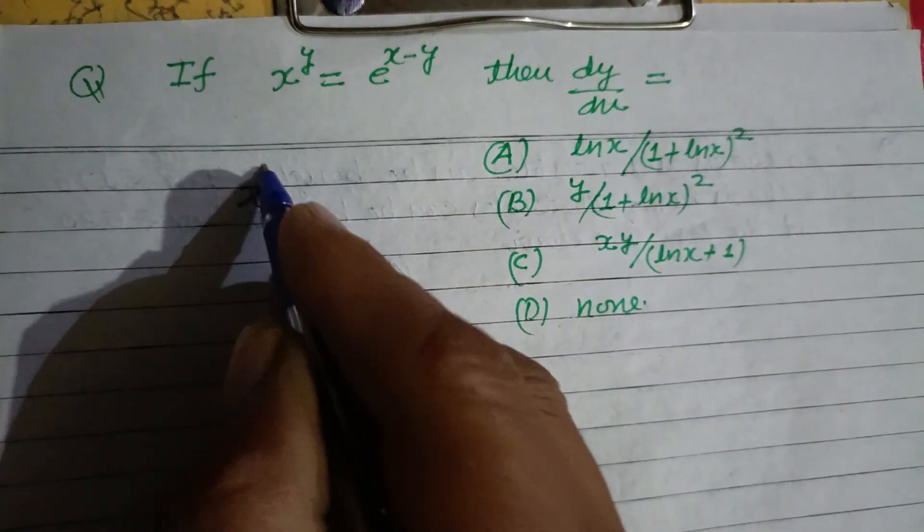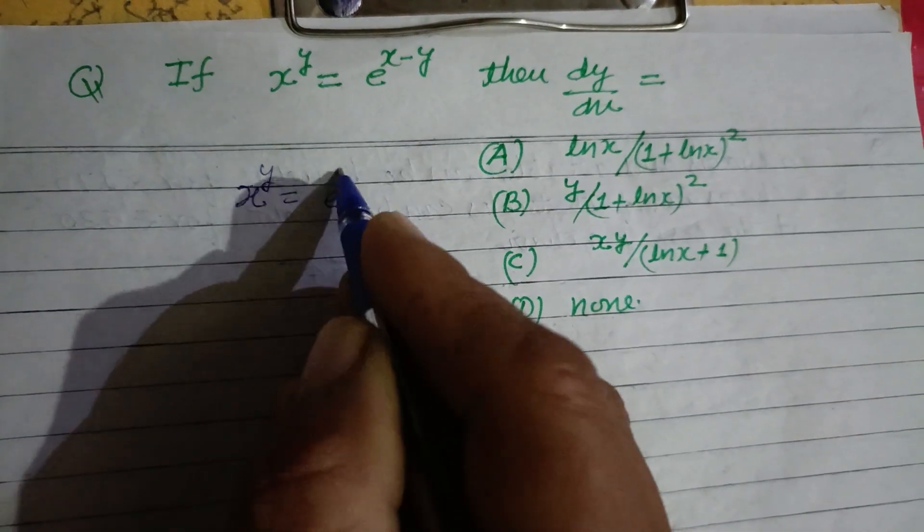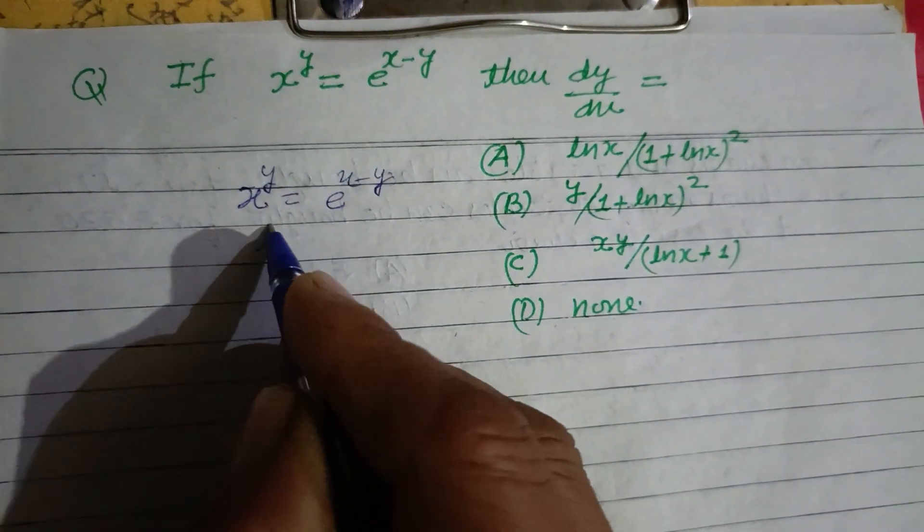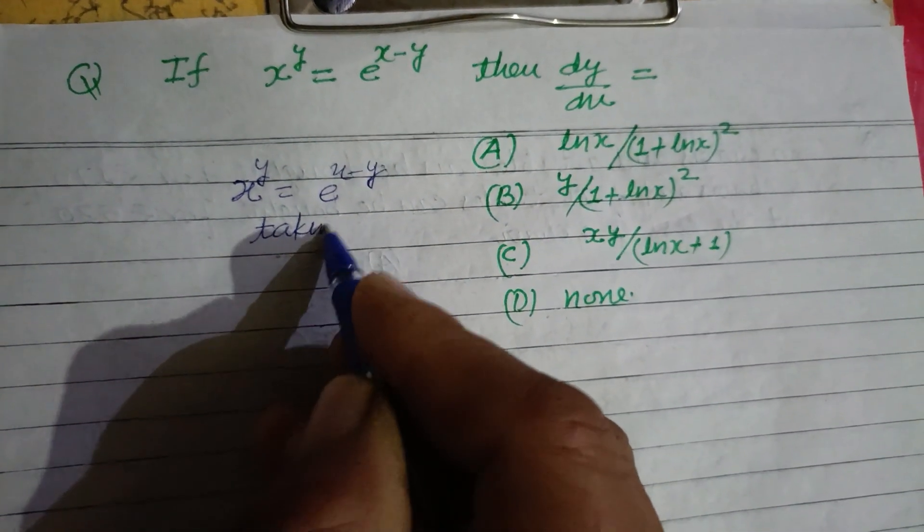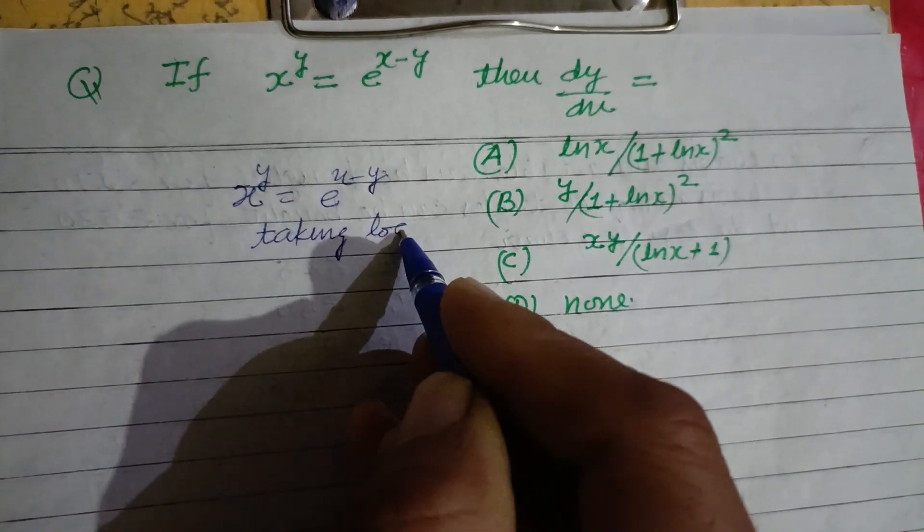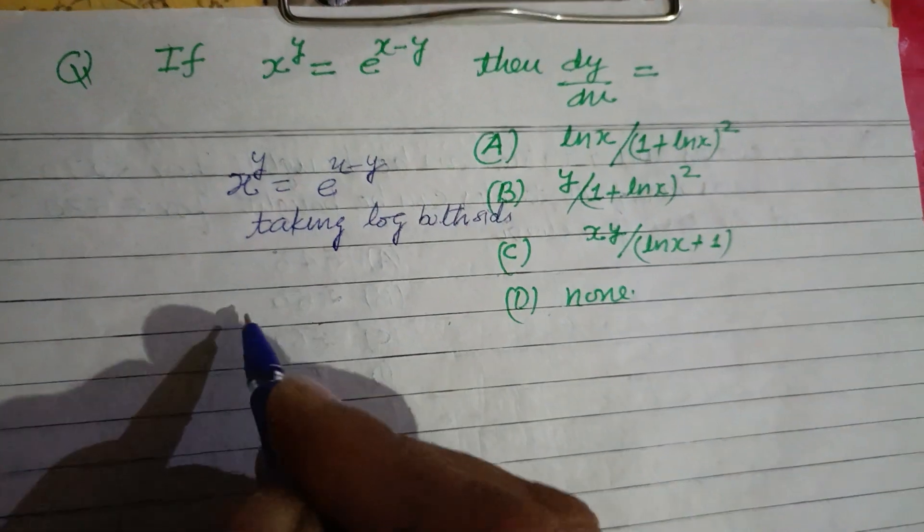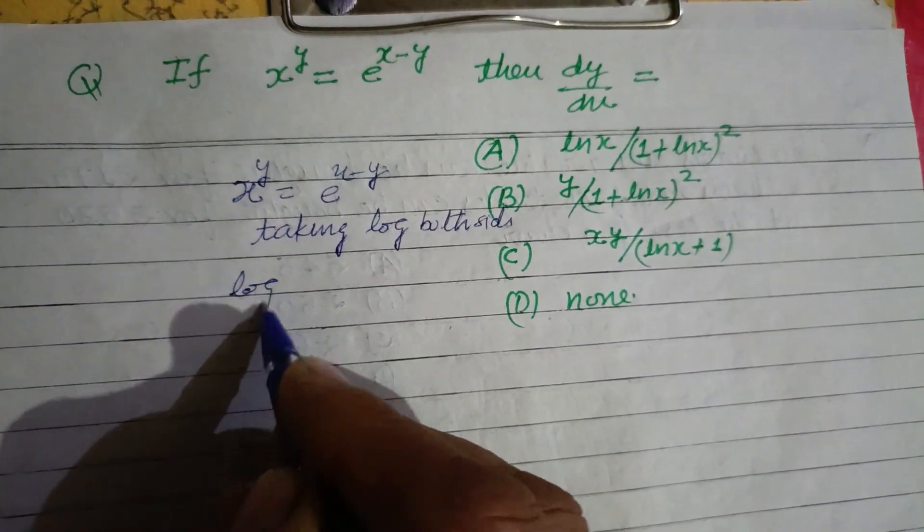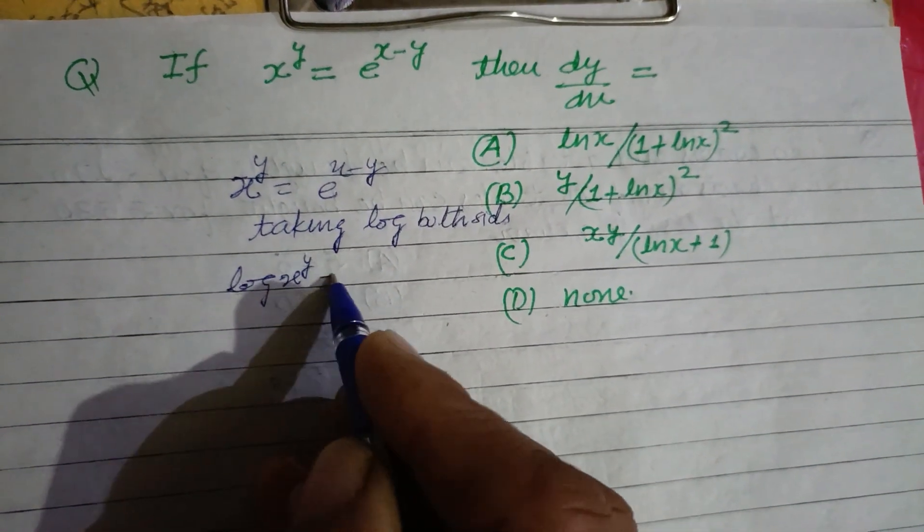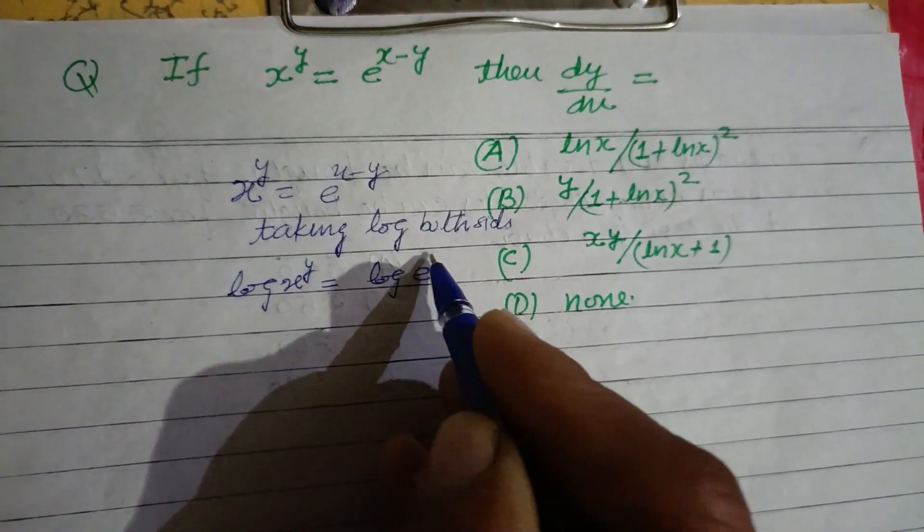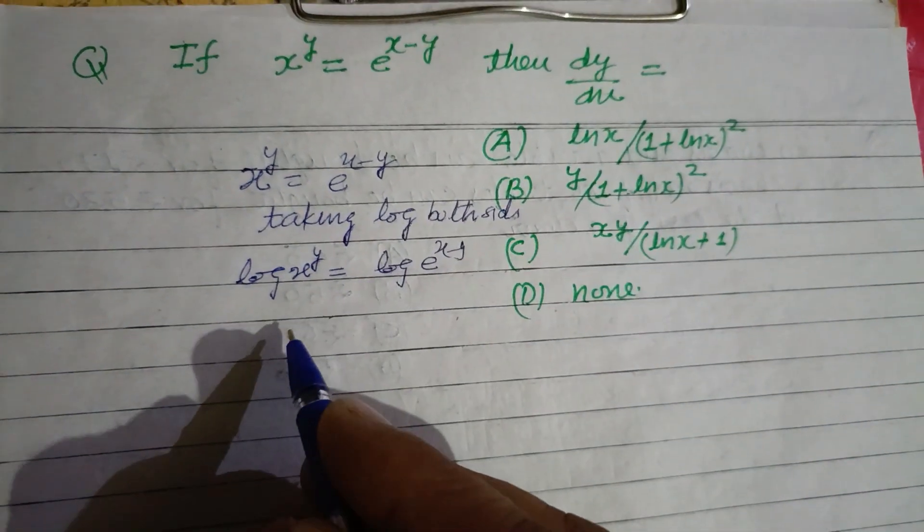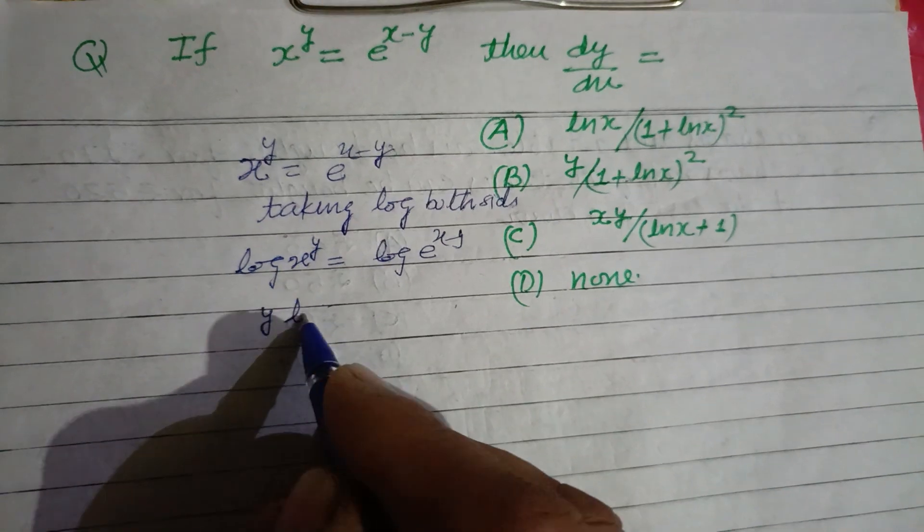So student, here x to the power y is given as e to the power x minus y. Taking log both sides.